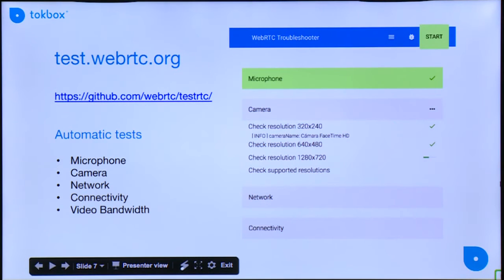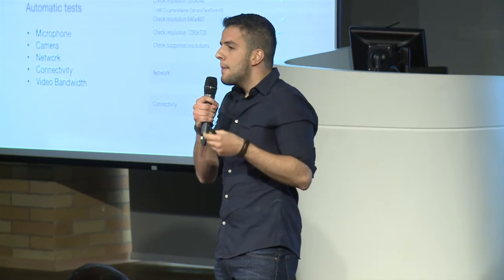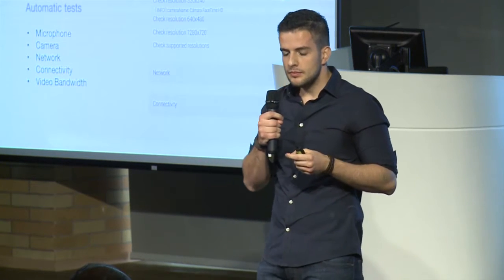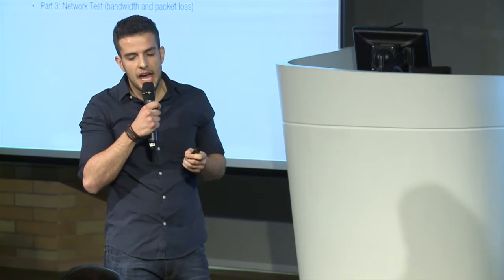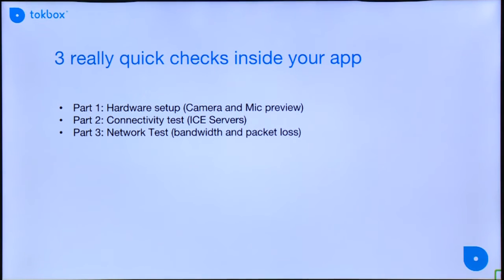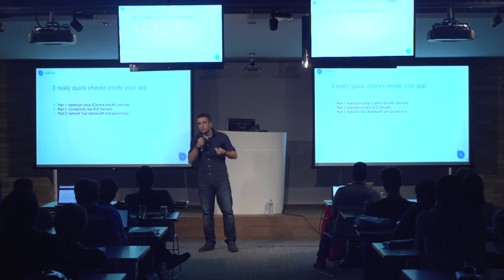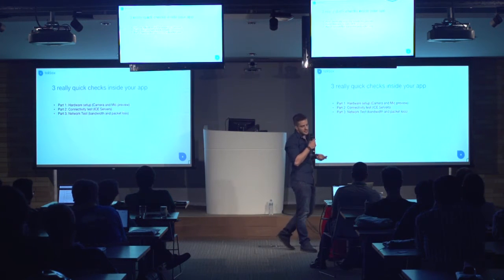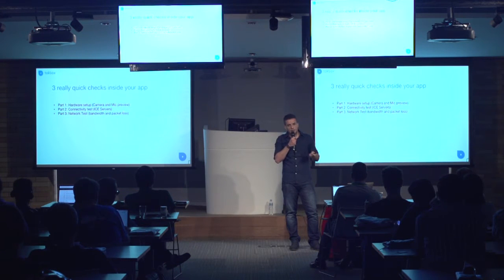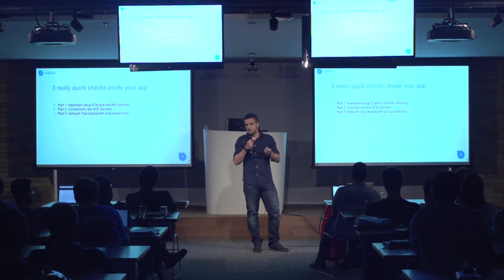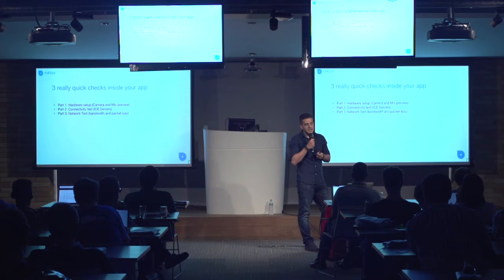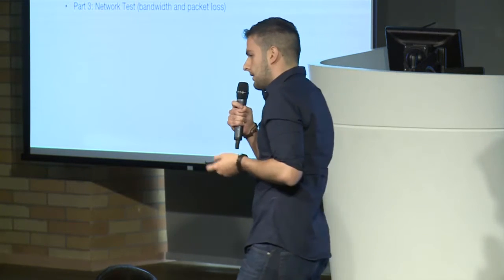So testforwebrtc.org is really great, but the point is: how can I avoid problems like this before users join the conference? I have three quick checks you can implement inside your app. The idea is that users can test these three things, and if something goes wrong, you can just play a message to the user before they connect to the session. The first part is the hardware setup, testing the microphone and camera. The second is the connectivity test, testing connectivity to our ICE servers — our STUN and TURN servers. The last part is the network test, checking bandwidth and packet loss.